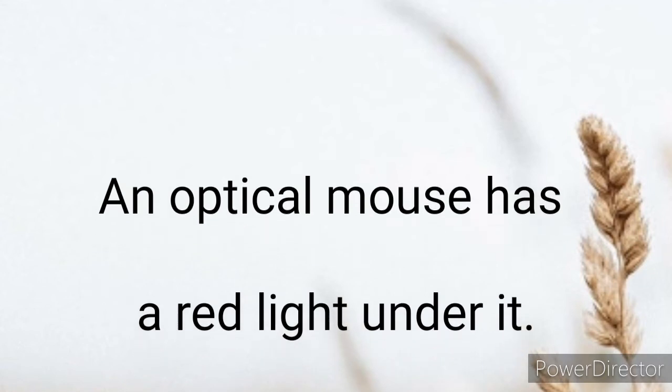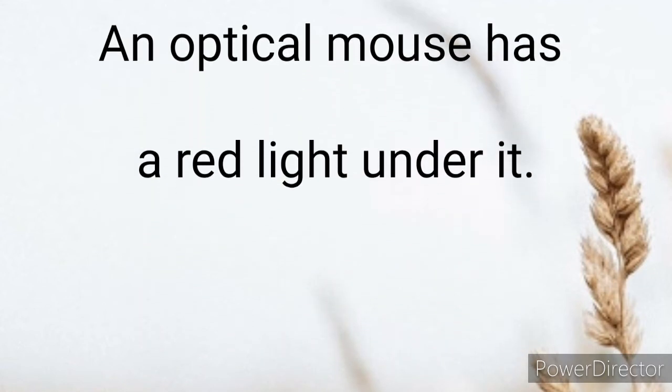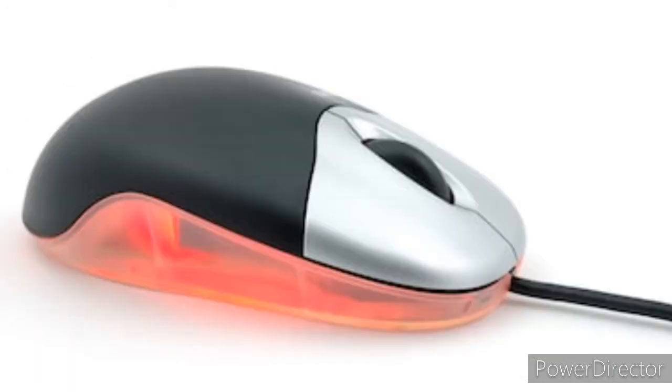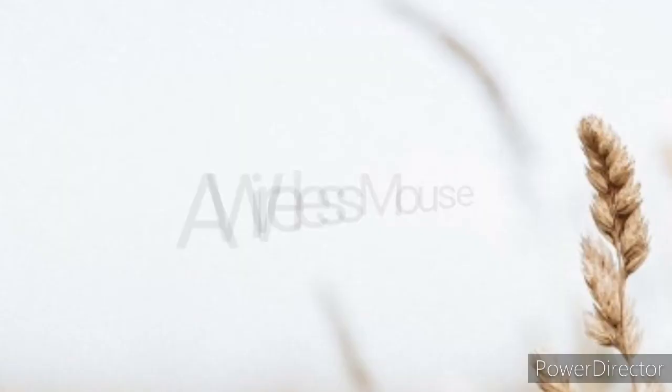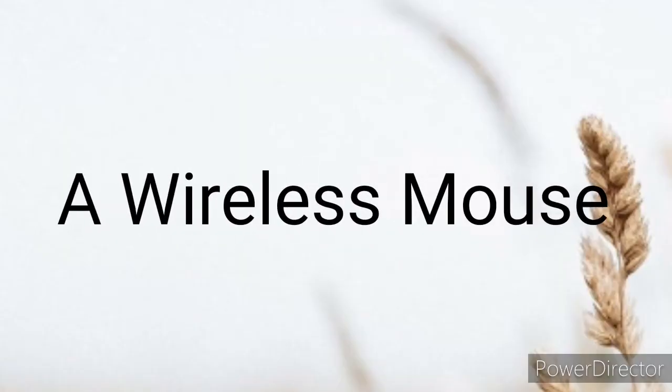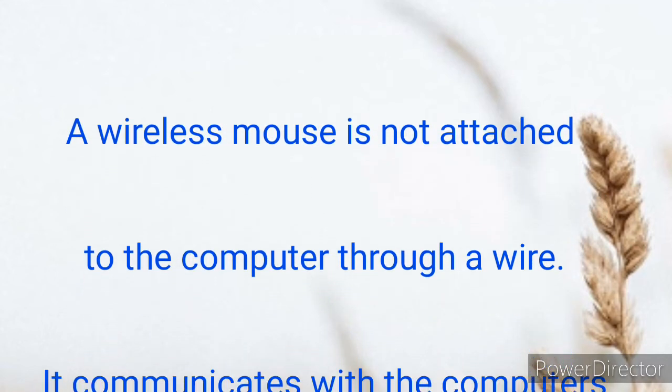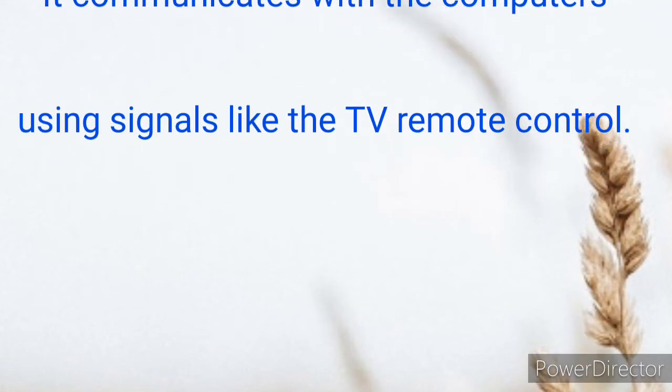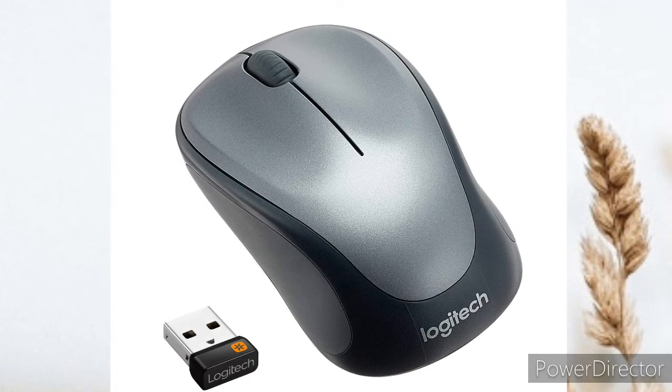Optical mouse: An optical mouse has a red light under it. Wireless mouse: A wireless mouse is not attached to the computer through a wire. It communicates with the computer using signals like the TV remote control.